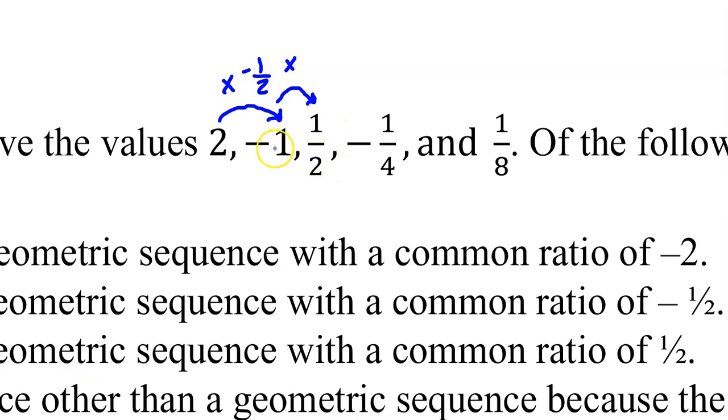One half divided by negative 1 is negative 1 half again, so looking good for a common ratio. Negative 1 fourth divided by 1 half is the same thing as negative 1 fourth times 2 over 1. This is going to be negative 2 over 4, which reduces down to, you guessed it, negative 1 half.